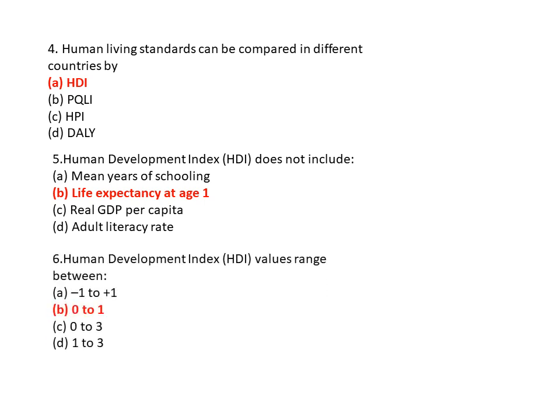Question 6: Human Development Index value ranges between? Option A is minus 1 to plus 1, option B is 0 to 1, option C is 0 to 3, and option D is 1 to 3. So option B is the correct answer — 0 to 1.